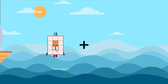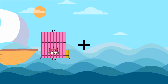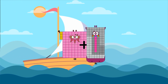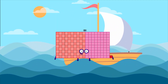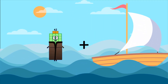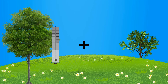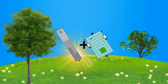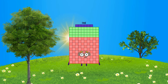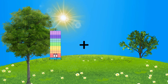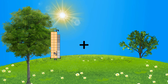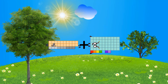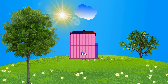83 plus 98 equals 181. 92 plus 54 equals 146. 29 plus 57 equals 86.